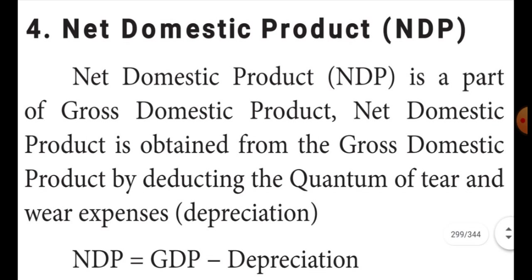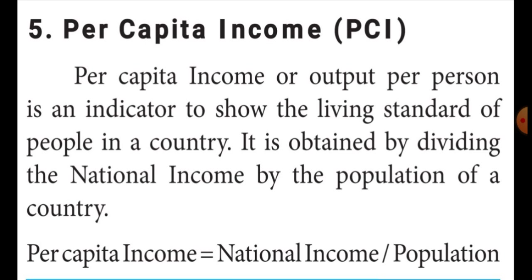The fifth one is per capita income — very, very important two-mark question. Per capita income means one particular person's income, how we calculate. Per capita income or output per person is an indicator to show the living standard of people in a country. It is obtained by dividing the national income by the population. Per capita income is equal to national income divided by population.